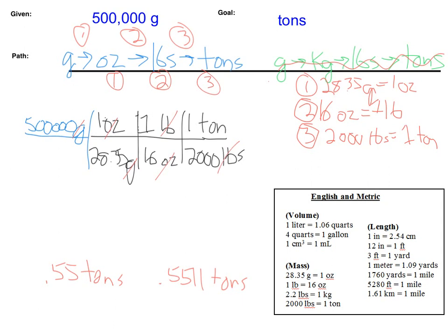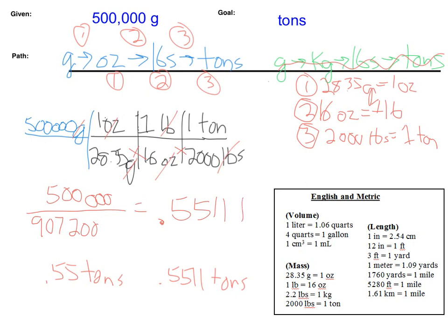Now we need to go through and solve for this. To figure out what to put in our calculator, we have 500,000 on top divided by 28.35 times 16 times 2,000. So 28.35 times 16 times 2,000 gives us 907,200. We take 500,000 divided by 907,200, and we get our answer of 0.5511 tons.